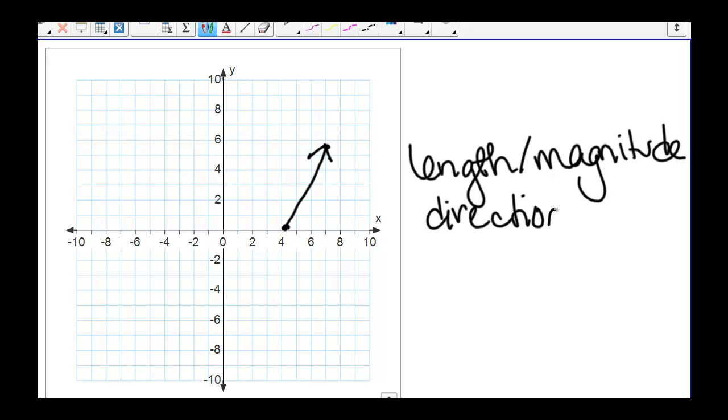So it has direction, pointing in a direction. We can label this vector either by—let's call this Q and this end P—so this is the vector QP. We can also call this vector U with an arrow, or in type you'll often see it as a bolded U.